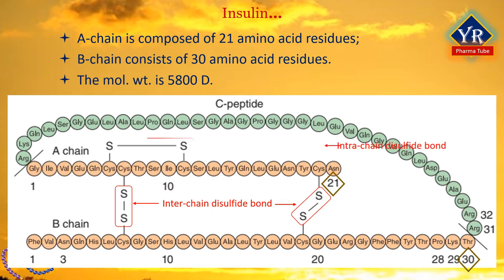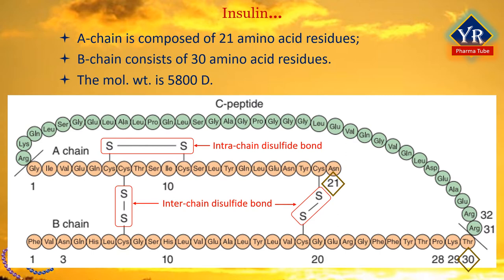There is an additional intra-chain disulfide bond within the A chain between cysteine residues at positions cysteine A6 and cysteine A11. The A chain exhibits two alpha helical regions at A1 to A8 and A12 to A19, which are anti-parallel, while the B chain has a central alpha helix covering residues B9 to B19 flanked by the disulfide bond on either side, and two beta sheets covering B7 to B10 and B20 to B23.